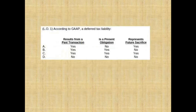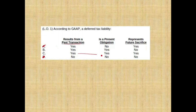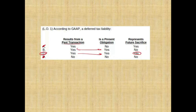According to GAAP, a deferred tax liability is a result of a past transaction — so it's not unique in that regard. But specifically it is a present obligation that represents a future sacrifice. That's the definition of a liability, and a deferred tax liability fits it. The answer is C. A deferred tax liability should fit the definition of a liability any way you frame it.